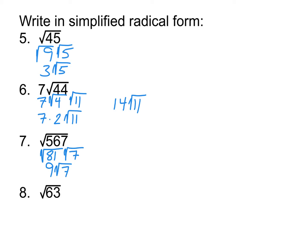All right. And finally there, for number 8, what is the biggest perfect square we can divide into 63? 9. So it becomes root 9 times root 7, which is then 3 root 7 for our final answer.